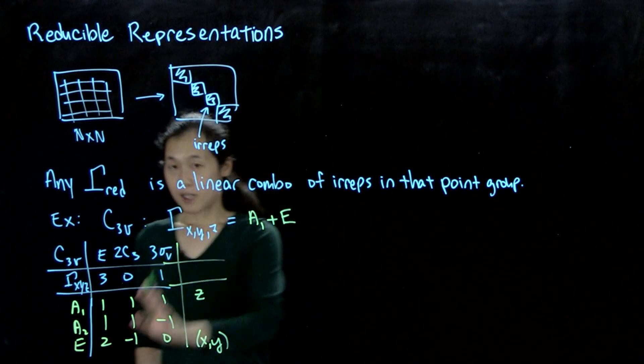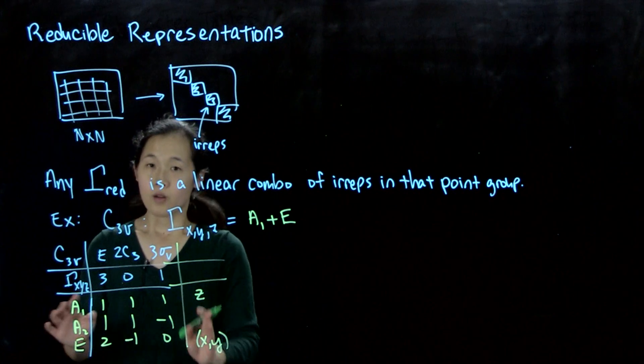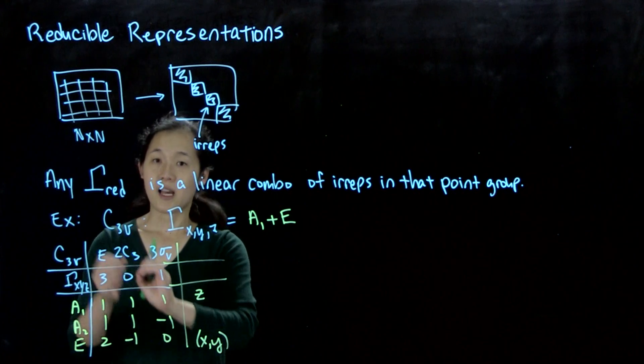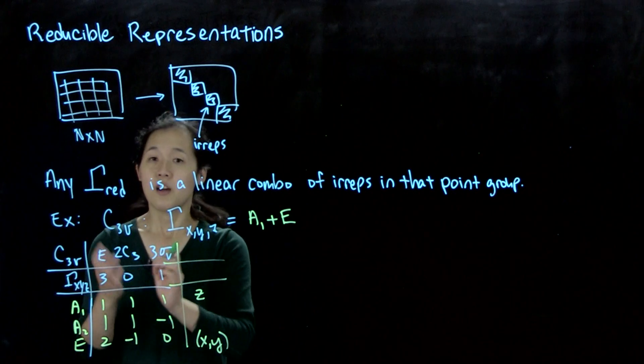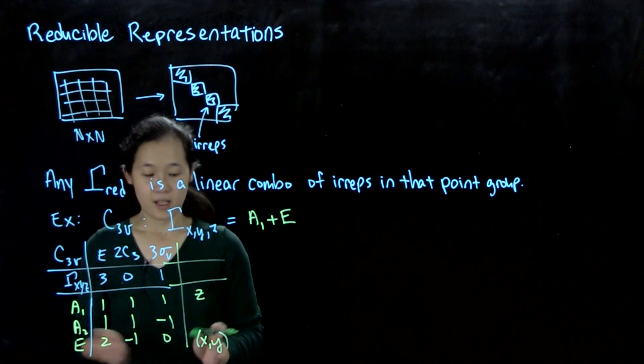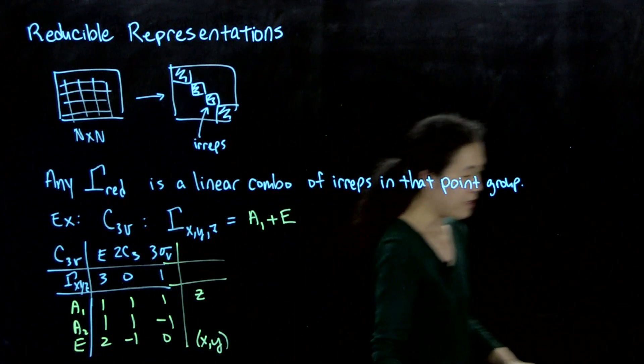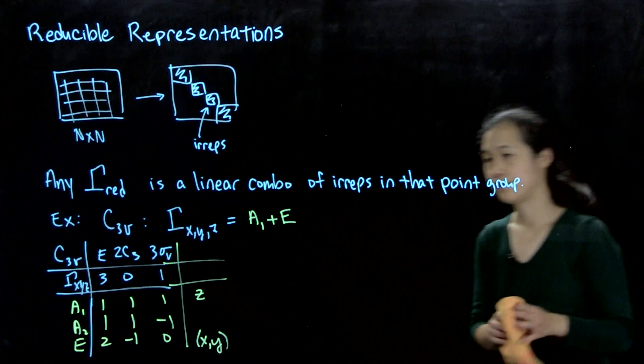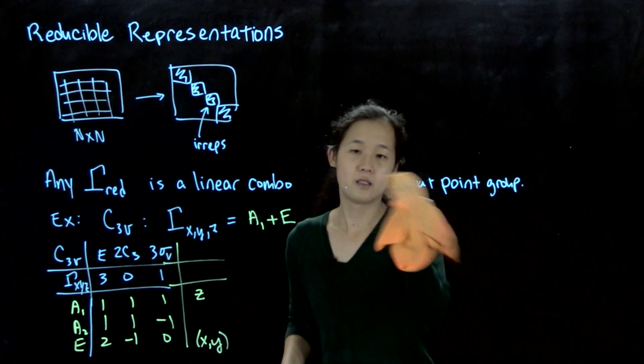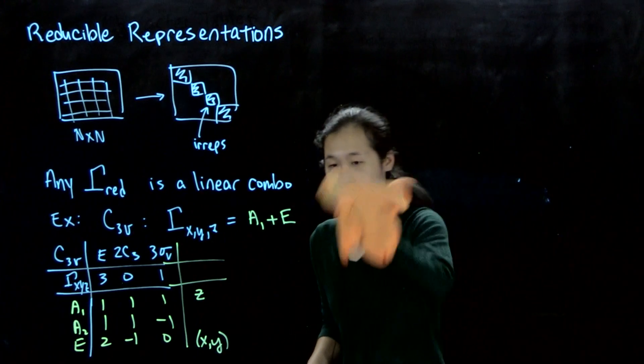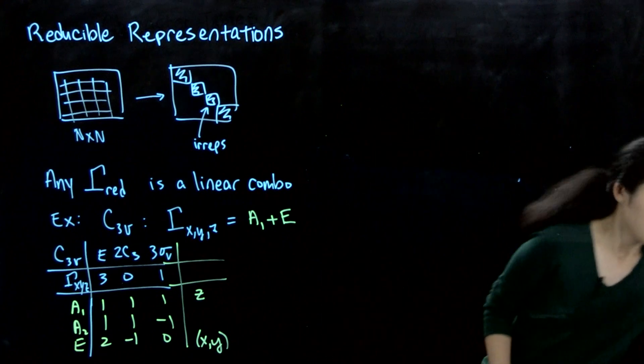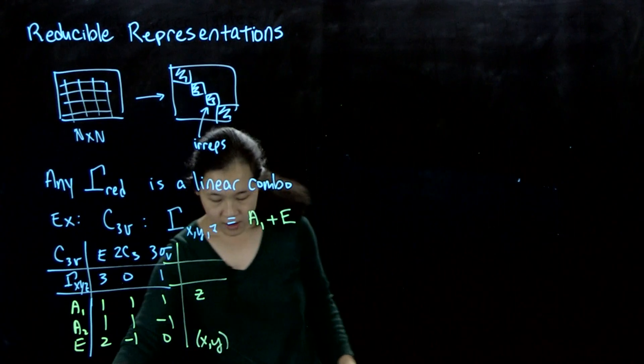We did this by inspection, where we were able to look at which irreps we have and find which ones add up to gamma x, y, z. There is a more quantitative way to do that, and we'll go through that here.